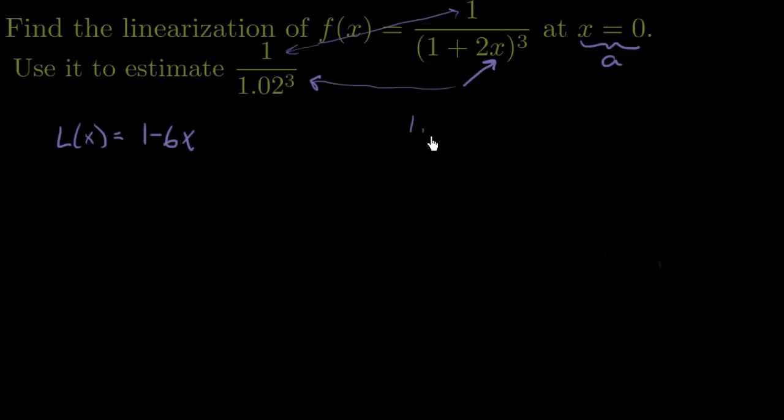So what we're going to do is we're just going to say 1.02 has to equal 1 plus 2x. We just got to figure out what that x is. So I'm going to subtract 1 from both sides, and we get 0.02 equals 2x, and then we'll divide both sides by 2, and we get 0.01 equals x.